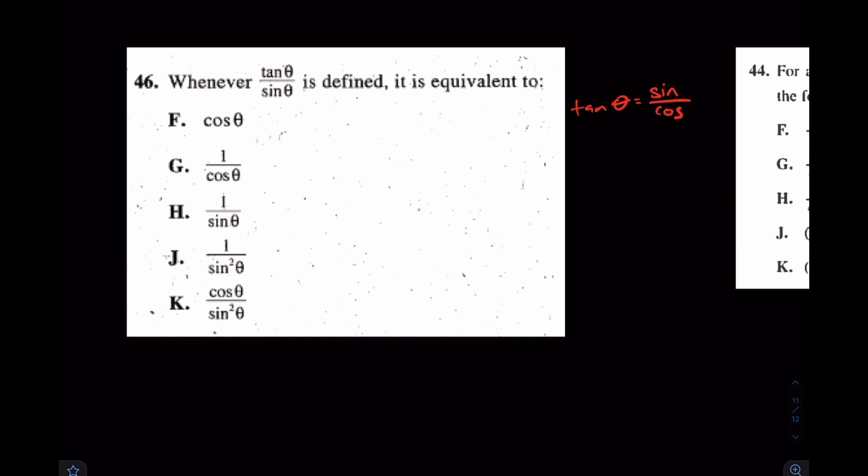Tangent is equal to sine over cosine. So that's going to help us with this question. We have tangent, which is sine theta over cosine theta, all over sine of theta. And at that point, you can probably see what the answer is going to be, but for me, I always put this over 1, just so it's an even complex fraction like that.